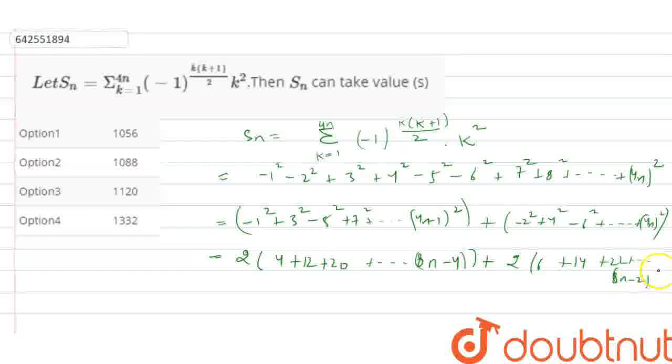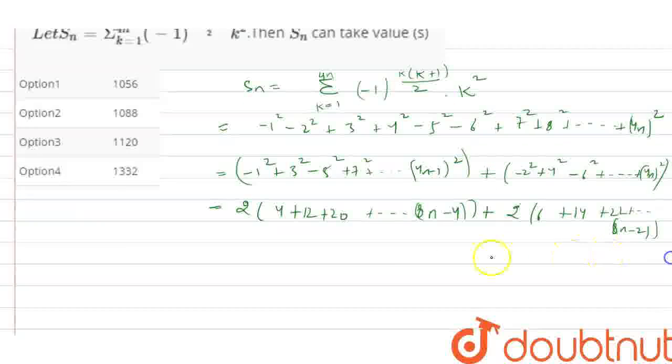There are n terms in the arithmetic progression, so we can write with the help of summation formula, the value will be n times 8n plus n times 8n plus 4, which gives us n times 16n plus 4.